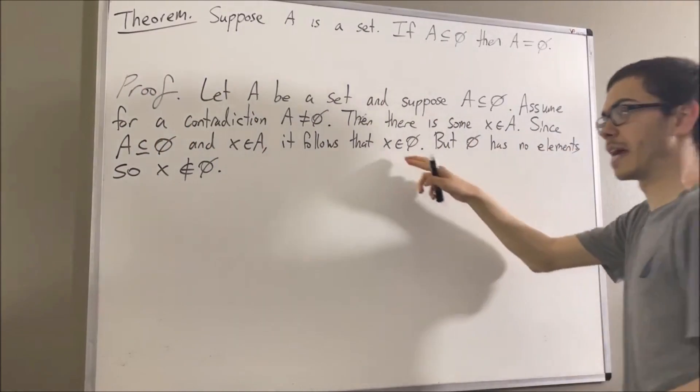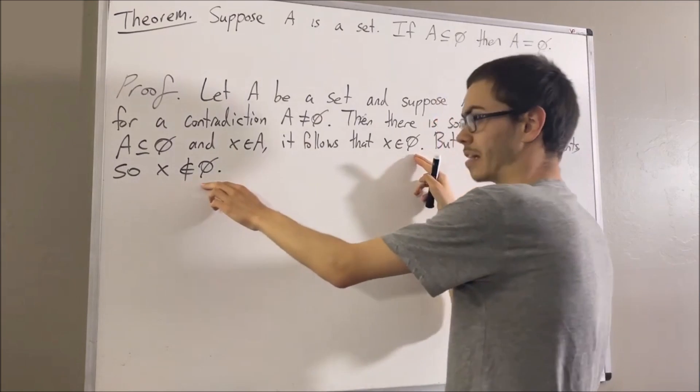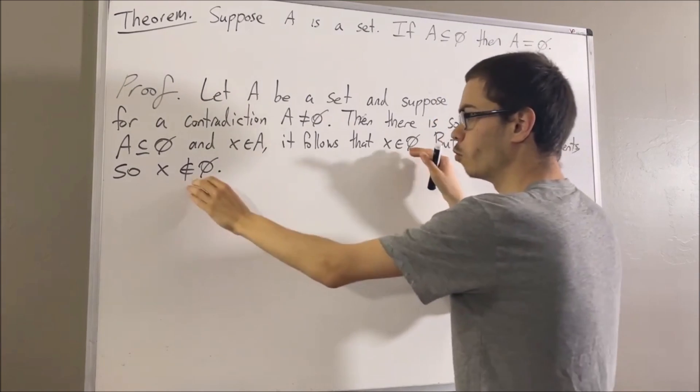So, we have deduced that X is an element of the empty set, and X is not an element of the empty set. So, we deduce the contradiction.